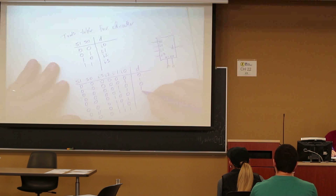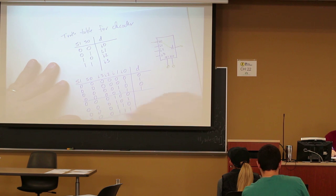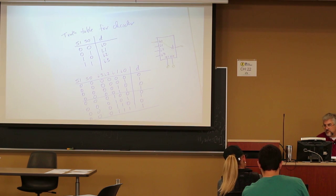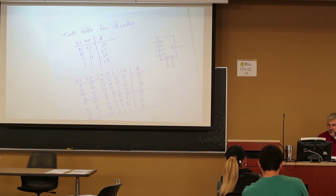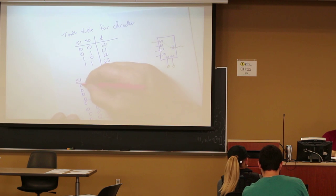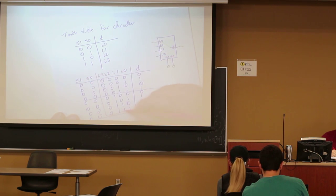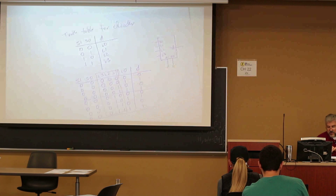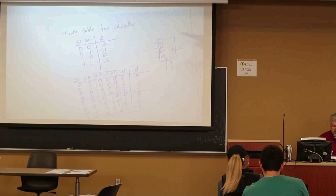So again, when S1=0, S0=1, it doesn't matter what I3, I2, I1 are — the output just matches whatever I0 is. And that is a multiplexer — also simply called a mux.